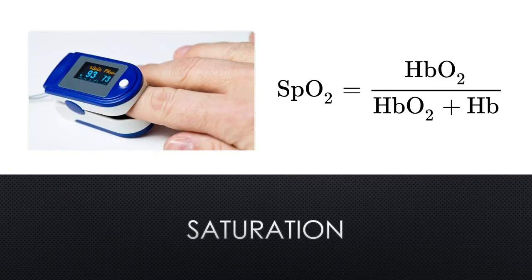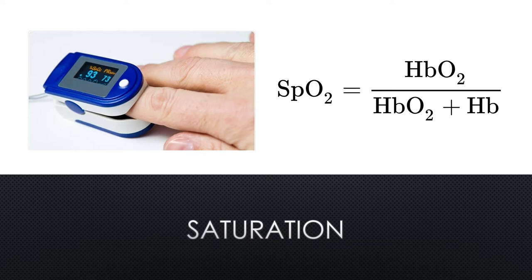Oxygen saturation is the fraction of oxygen-saturated hemoglobin relative to the total hemoglobin in the blood. The human body requires and regulates a very precise and specific balance of oxygen in the blood. Normal arterial blood oxygen saturation levels in humans are between 95 and 100 percent. Finger oximeters, which became readily available during the COVID-19 pandemic, are very useful to identify low saturation levels in patients with chronic wounds, and the use of normobaric oxygen could be tailored to individual requirements.